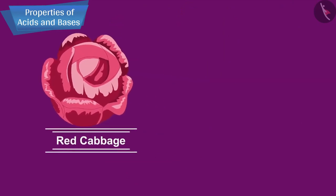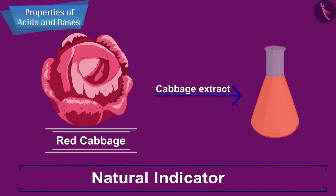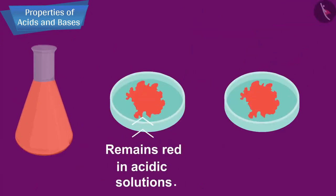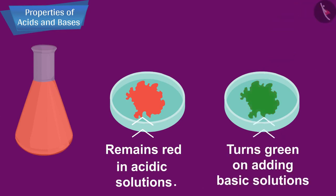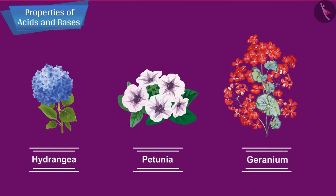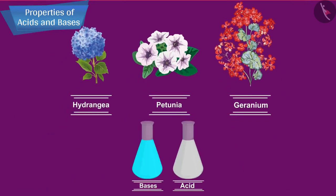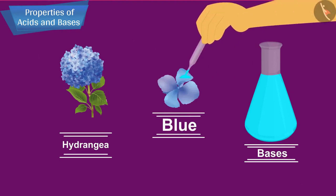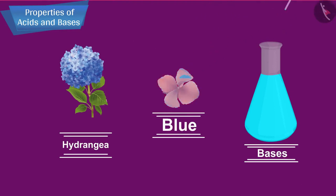The dye obtained from red cabbage leaves is also a natural indicator and is red in colour. It remains red in acidic solutions and turns green on adding basic solutions. The coloured petals of some flowers like hydrangea, petunia, and geranium also change colour in the presence of acids and bases and act as indicators. For example, the flowers of the hydrangea plant are blue in colour and they turn pink in the presence of basic solutions.